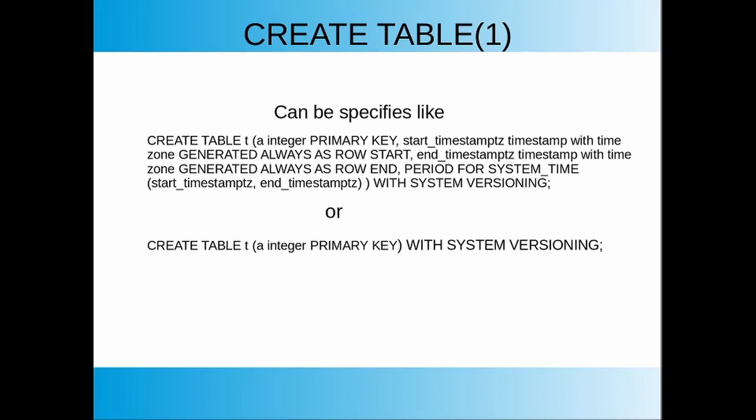There are two options to create a system-versioned table. If it is okay to use default system versioning column names, just adding the WITH SYSTEM VERSIONING keyword at the end of the table definition is enough — it enables system versioning with default column names. But if you want to use a different name for the system versioning columns, you have to use the extended standard option as specified on the screen. The row_start and row_end timestamp with time zone columns are generated always as the row start and end time specification.